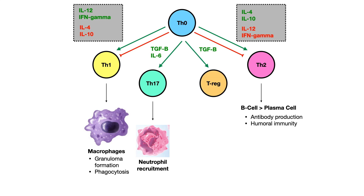Lastly, you can go from TH0 cells to what's known as Tregs. TGF-beta encourages TH0 to differentiate into Tregs. The reason it's called a Treg is because it regulates immunity — specifically autoimmunity. The presence of Tregs inhibits autoimmunity to prevent all of these various T cell responses from accidentally destroying things they're not supposed to destroy. This is the differentiation pathway of the various helper T cells. Much more immunology to come — I hope this was helpful.